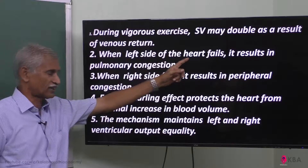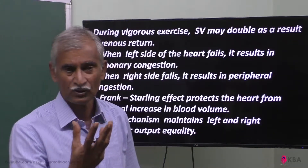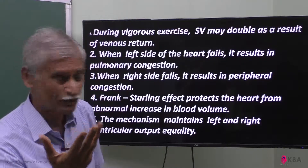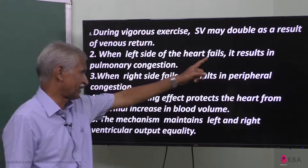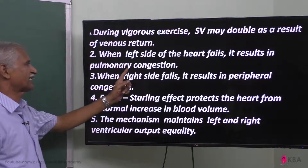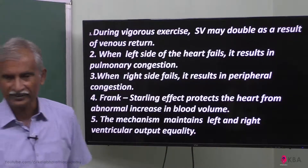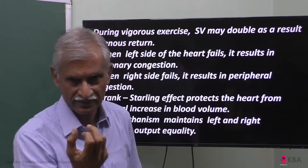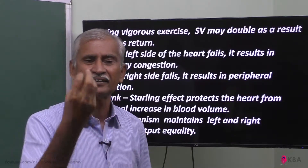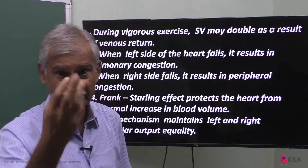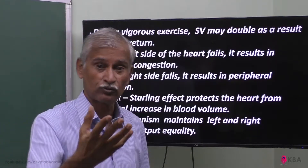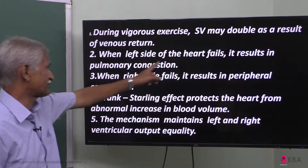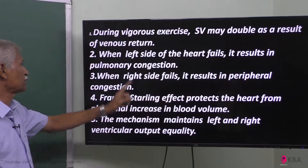When the left side of the heart fails, the end diastolic volume is affected. When the left side of the heart fails, it results in pulmonary congestion. The left side receives blood from the lungs, and failure results in congestion of the lungs — blood volume is retained. That is called congestion. So pulmonary congestion happens when the left side of the heart fails.